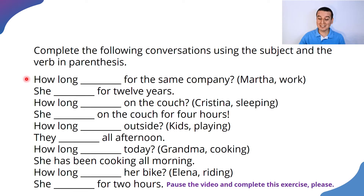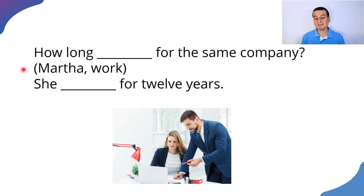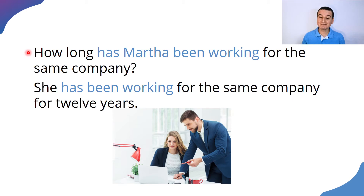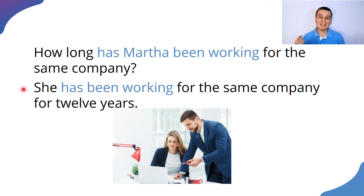I hope that you did it and that you have your answers ready so we can compare them. Let's look at the first conversation. The complete answer is: how long has Martha been working for the same company? We use 'has' because Martha is singular. We have 'been' and 'working.' And the answer is: she has been working for the same company for 12 years. Listen to the two people pronounce this example. How long has Martha been working for the same company? She has been working for the same company for 12 years.